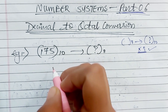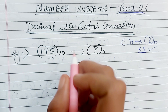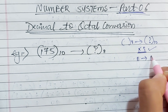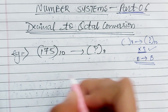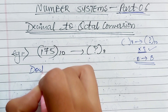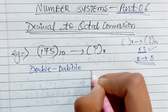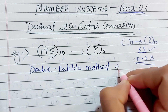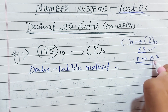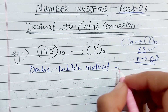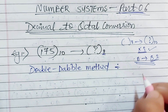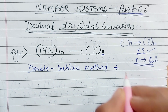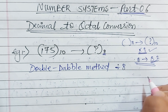Once we have to convert 175 to octal, we have to do the same steps as decimal to binary conversion. If you remember, we used to constantly divide by 2 because we wanted to convert to binary. But since we want to convert to octal, the same procedure and methodology applies — we have to divide by 8.